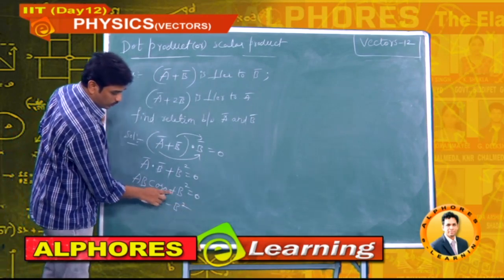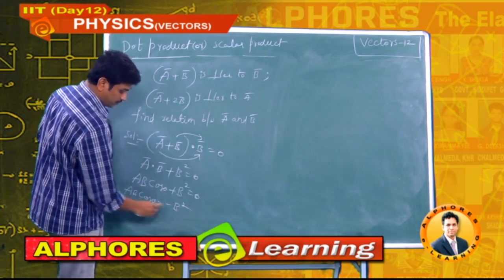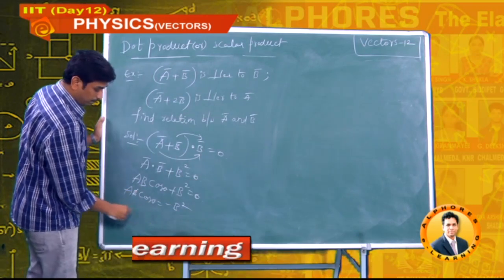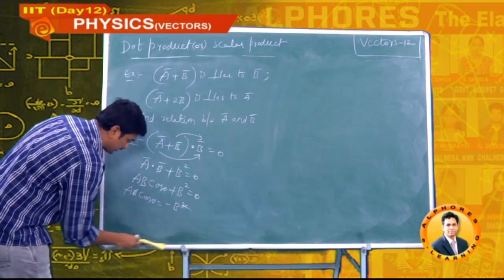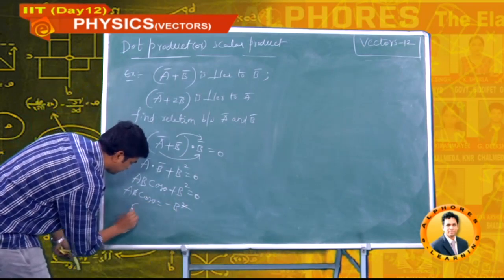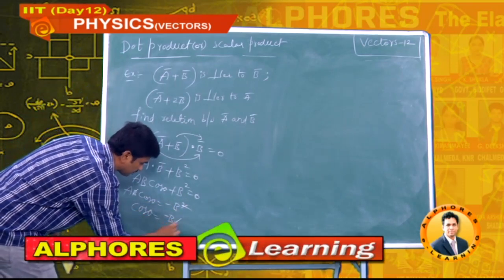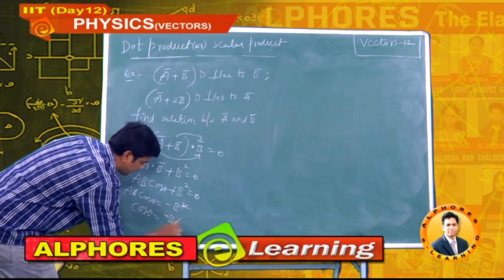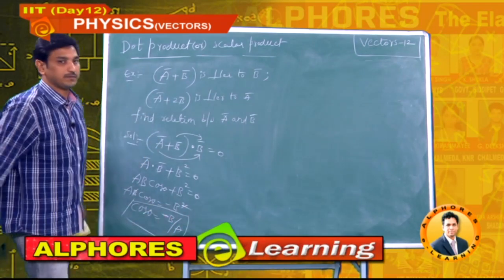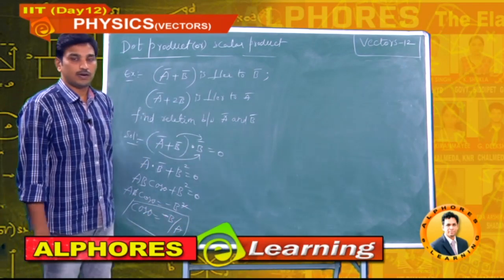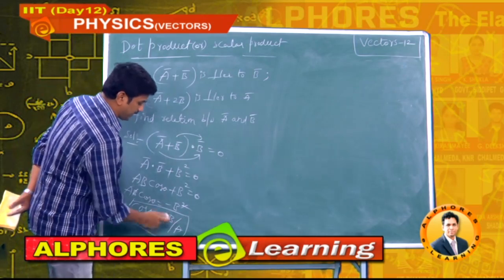Rearranging: ABcosθ = −B². Dividing both sides by AB: cosθ = −B/A. This is the result from the first condition.